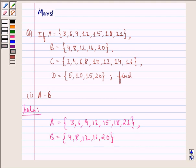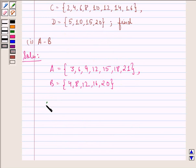Therefore, A minus B becomes the set 3, 6, 9. Now, 12 is there in set A. It's also there in set B, so this gets cancelled.